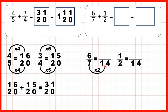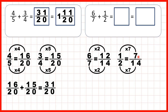Seven times two is fourteen and six times two is twelve. Two times seven is fourteen and one times seven is seven. So now that we have our equivalent fractions, we can rewrite our question. Instead of six-sevenths we can write twelve-fourteenths, and instead of one-half we can write seven-fourteenths.